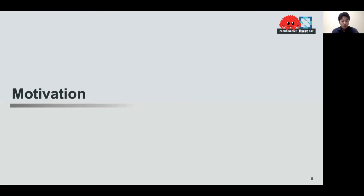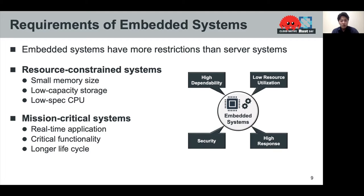Now, I'd like to talk about the motivation of our study. First, I will talk about the requirements of embedded systems. The main difference between general-purpose systems and embedded systems is that embedded systems have more restrictions than server systems. In resource-constrained systems, the memory size is small, storage capacity is lower, and the CPU is not high-performance. In the case of mission-critical systems, real-time applications run with critical functionality, and the systems have a longer lifecycle than servers. So we need to manage containers while meeting these requirements.